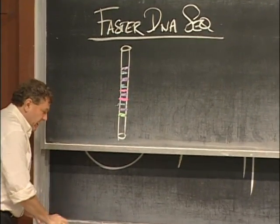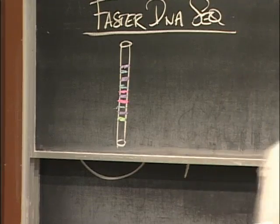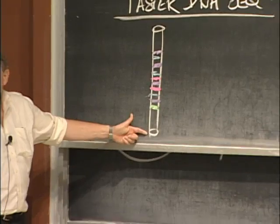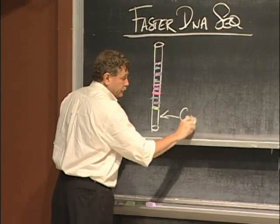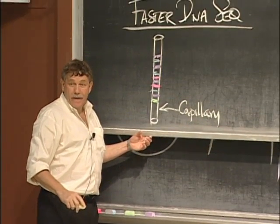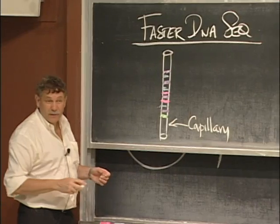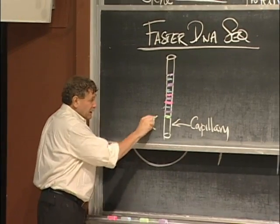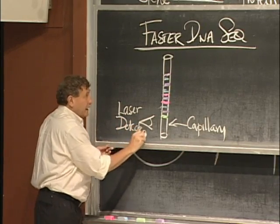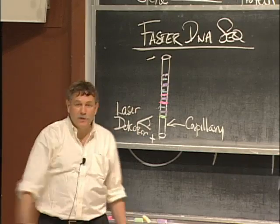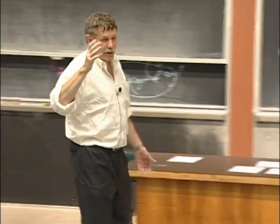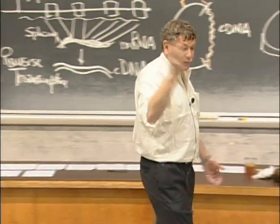And now, instead of putting this up against a piece of x-ray film, I could do this in a very thin tube called a capillary. And instead of holding it up to an x-ray film, I could just put a laser detector. I could turn on the electricity and watch the fragments go by and just look at it with my laser detector. Shines a light, I say, oh yeah, green, red, blue, blah, blah, blah, blah, blah, blah. That's the sequence.